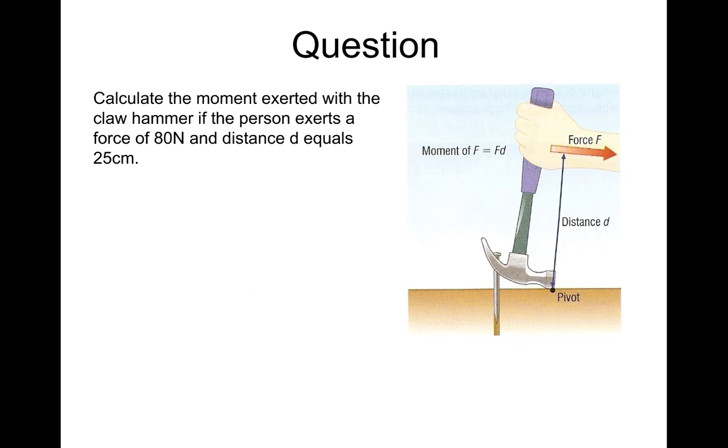So here's a question if you want to have a go. Calculate the moment exerted with the claw hammer if the person exerts a force of 80 Newtons and distance D equals 25 centimeters. So the moment is force times distance. The force is 80, and we've got a distance of 25 centimeters. But remember, the moment is measured in Newton meters, so we need to turn the 25 centimeters into meters. So 80 times 0.25, and it will go clockwise.